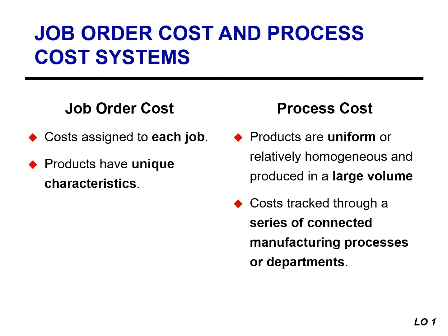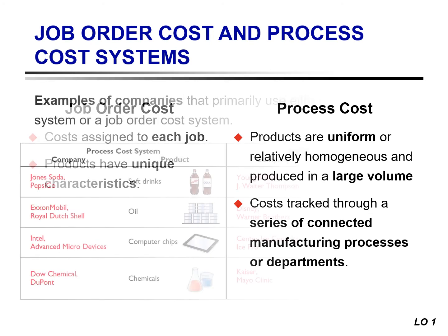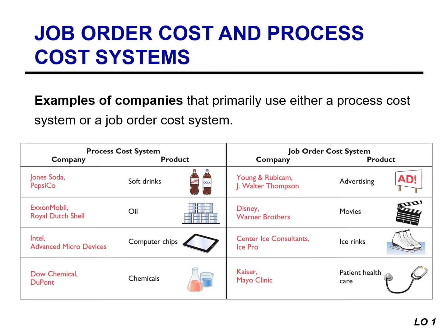Companies use process cost systems to apply cost to similar products that are mass produced in a continuous fashion, whereas a job order cost system assigns cost to specific jobs. What you are manufacturing will determine which system you will use to track costs.